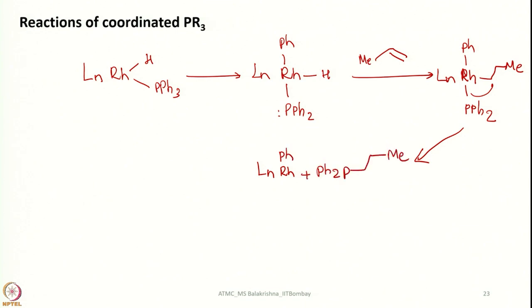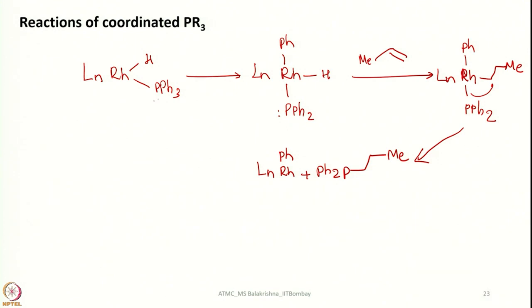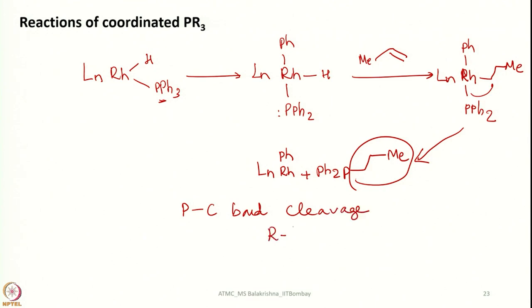So it is possible to activate the P-C bond of a coordinated tertiary phosphine. What happened here is the phenyl group has come out and in its place we have a new moiety — this is a typical P-C bond cleavage, also called R-group reshuffle or R-group shuffle. This comes very handy in generating a new kind of tertiary phosphine having different substituents on phosphorus. In our own group we have seen P-C bond cleavage and also migration of the phosphorus-bonded group onto the metal — very interesting chemistry.